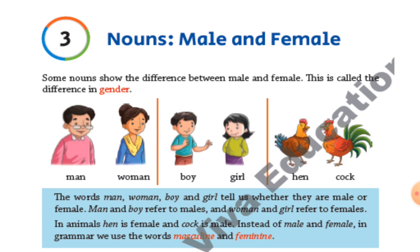Now, you see the example? Man and woman — man comes under male and woman comes under female. Boy comes under male and girl comes under female. Like in animals also — hen and cock. The words man, woman, boy, and girl tell us whether they are male or female. That means boy, girl, mother, father, grandfather, grandmother — who is male? Boy, man, grandfather. Right?